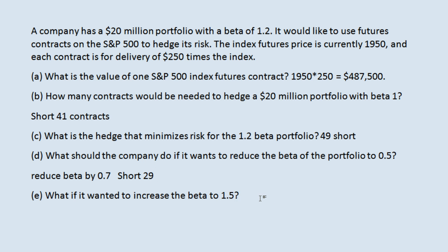The final question: what if we wanted to increase the beta to 1.5? Since we want to increase beta, we want to take on more risk, which means we will actually want long contracts. If the market goes up, we want both our portfolio and our futures contracts to go up. Conversely, if the market goes down, our portfolio goes down and our futures go down even more — so we are adding risk with long contracts.